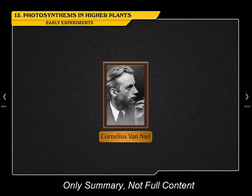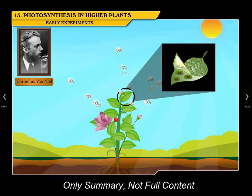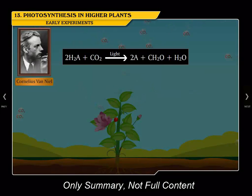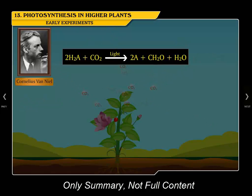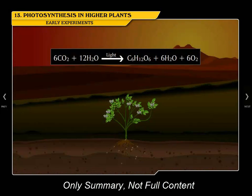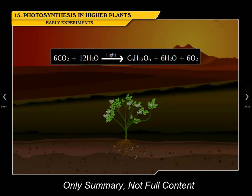Cornelius Van Neel demonstrated that photosynthesis is a light-dependent reaction involving the reduction of carbon dioxide by hydrogen into carbohydrates: 2H2A plus CO2 in the presence of light forms 2A plus CH2O plus H2O. In plants, water is the hydrogen donor and is oxidized to oxygen. The overall equation for photosynthesis is: 6CO2 plus 12H2O in the presence of light gives C6H12O6 plus 6H2O plus 6O2.